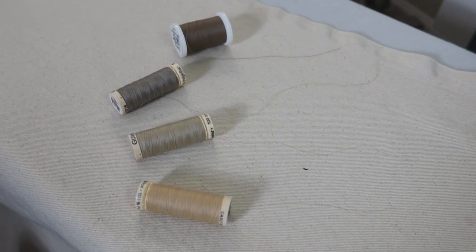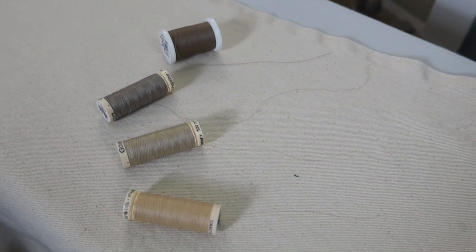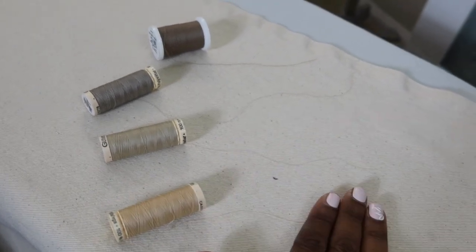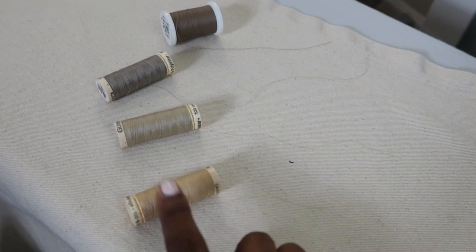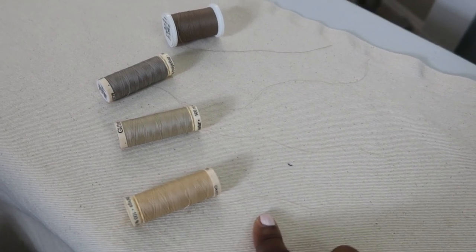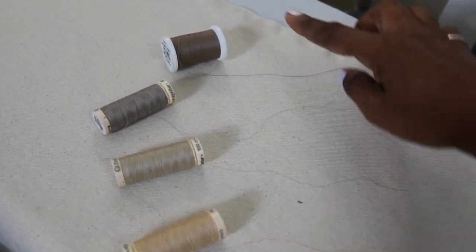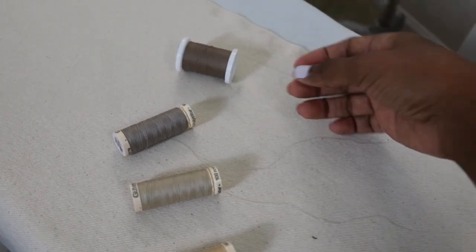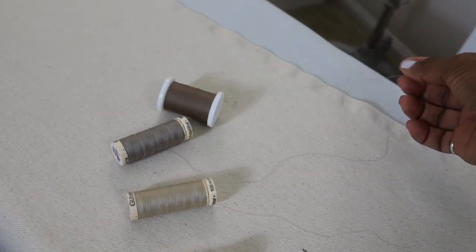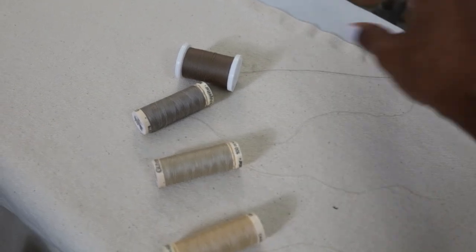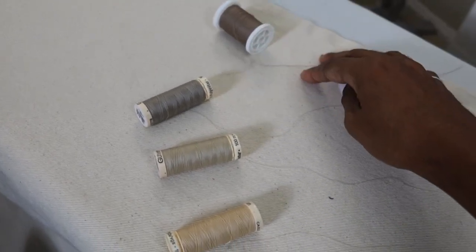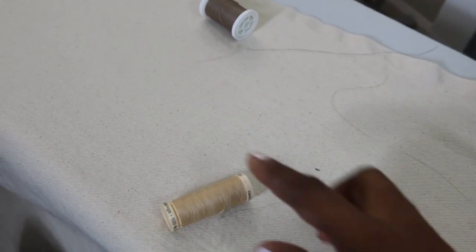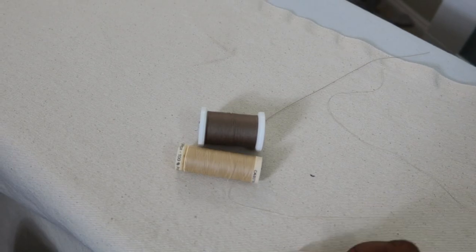These are the threads that I have to choose from, and I know you can buy topstitching thread. I'm just using regular thread for my topstitching. I think I'm going to use this for the actual pants, and I'm really leaning towards using this color for the topstitching because it's not too too dark, but it's not too too light either. So I'll put these to the side, and I think these are the two that I'm going to go with.